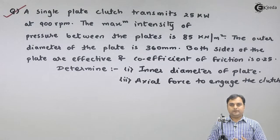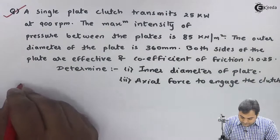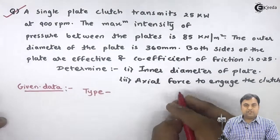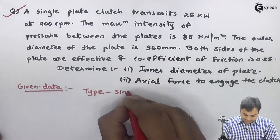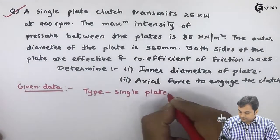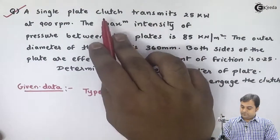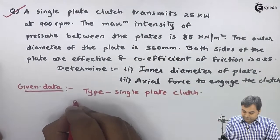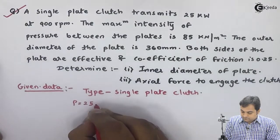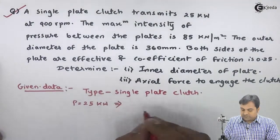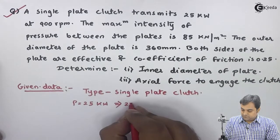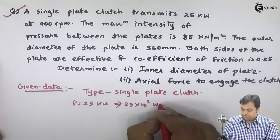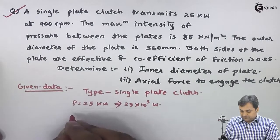Let us start this problem by writing the data. The type of clutch is single plate. Power is given as 25 kilowatts, which I will convert: it becomes 25 into 10 raise to 3 watts. Speed is given at 900 rpm.